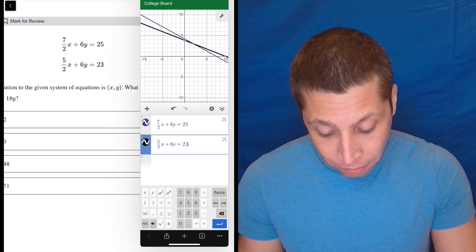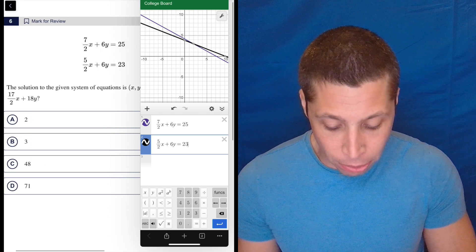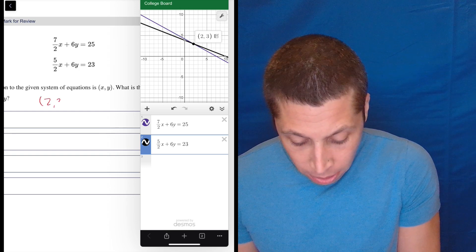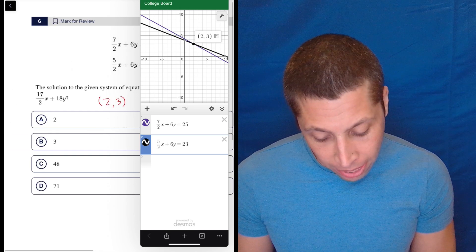But there you go. We have to find the point of intersection because we need to get the values of x and y. So we do that first. We get 2, 3. So 2, 3. And then we're going to plug that in here.